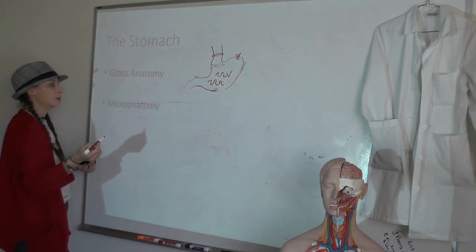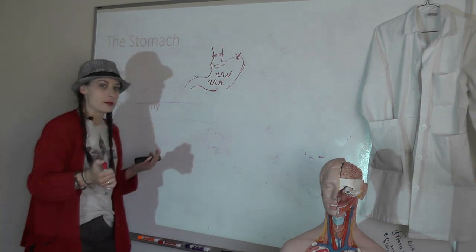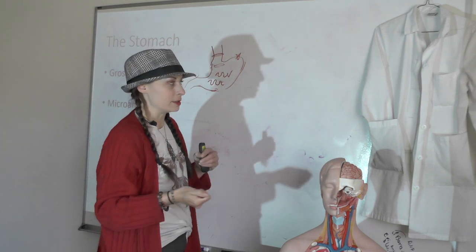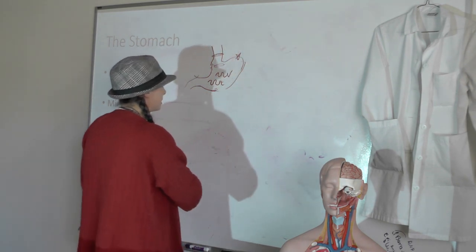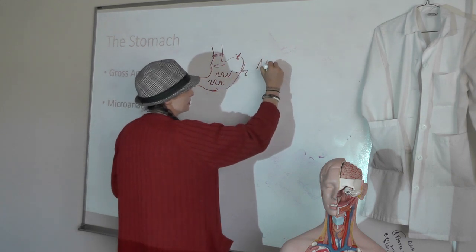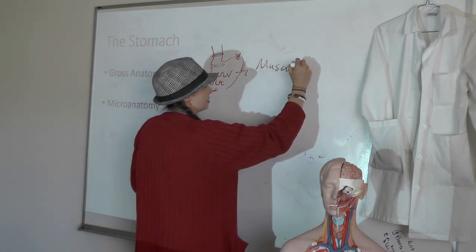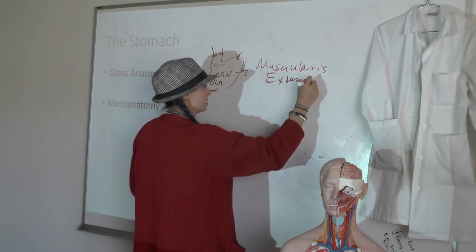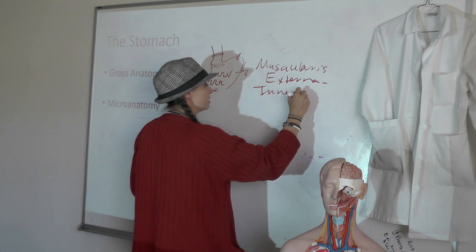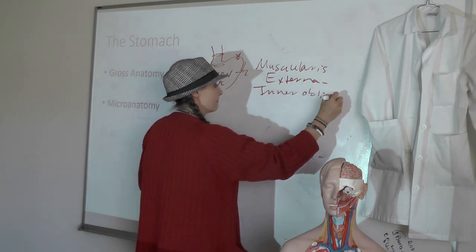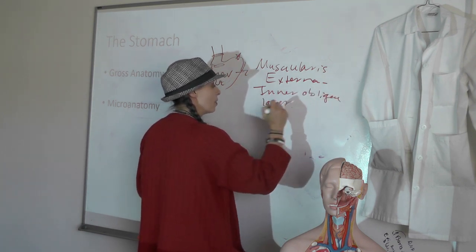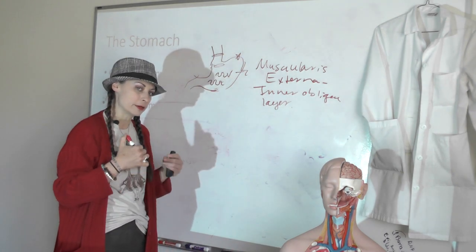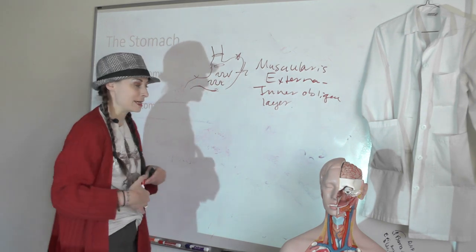As far as micro anatomy goes, we said there were specializations in the wall we needed to remember for each organ. One specialization in the wall of the stomach is that its muscularis externa has an extra inner oblique layer. This extra inner oblique layer is going to help with the forceful mixing and grinding that occurs in the stomach, mixing material you swallowed with your gastric juice.